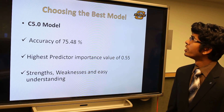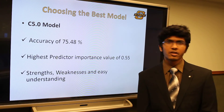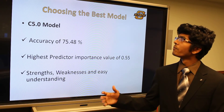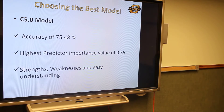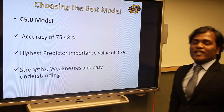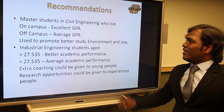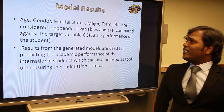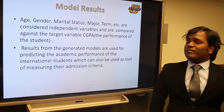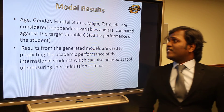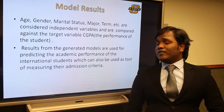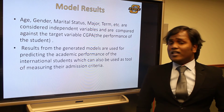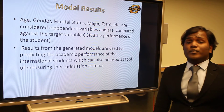That's all about the model building. I will hand over to Arun Ambi who will take over the model results and the objective. Thank you. Hi, I am Arun. I will talk about the model results. In our model results, we have taken the independent variables as age, gender, marital status, major, term and other parameters against our target variable CGPA, which is the performance of the international students. Results from the generated models are used for predicting the academic performance of the international students, which can also be used as a tool for measuring their admission criteria.